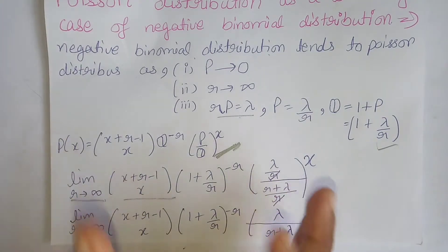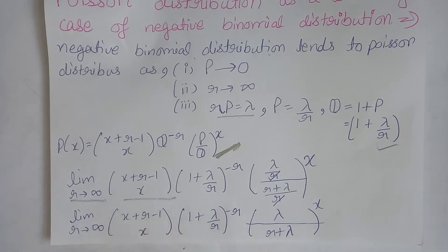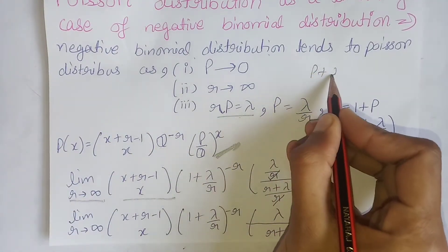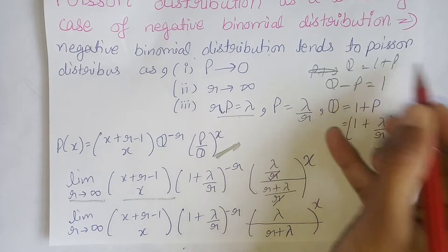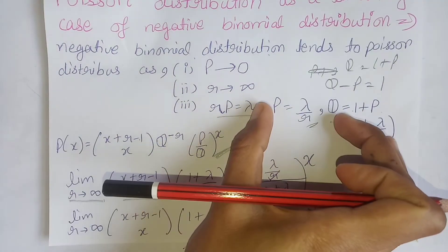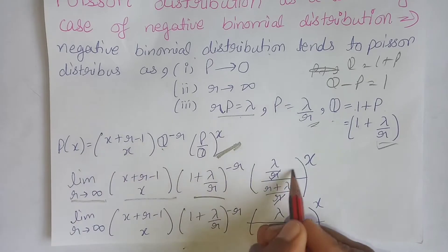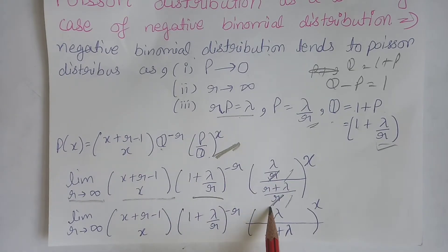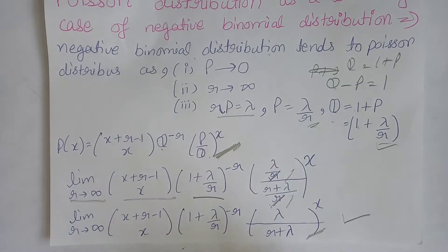Capital P equals lambda divided by r. Further, since capital Q minus capital P equals 1, that means capital Q equals 1 minus P, which gives us Q equals 1 minus lambda over r. So we now have both capital P and capital Q expressed in terms of lambda.